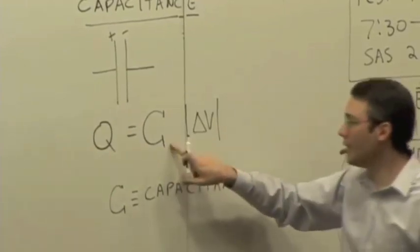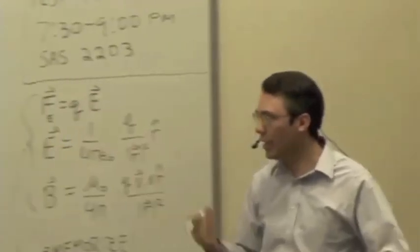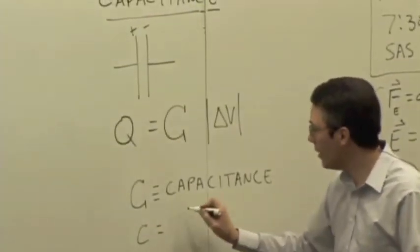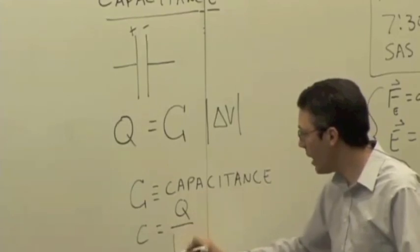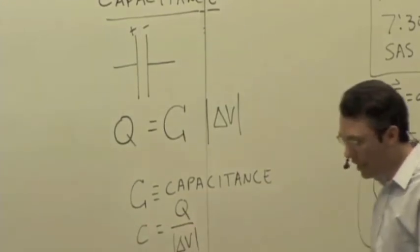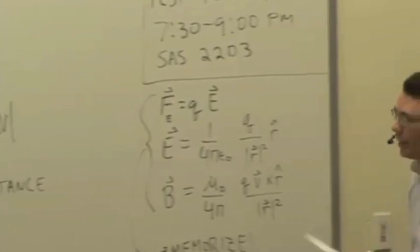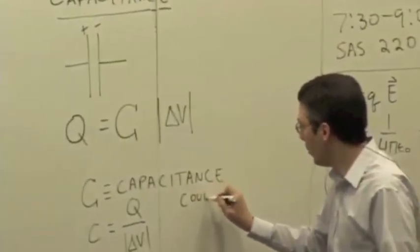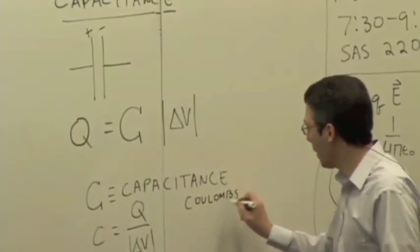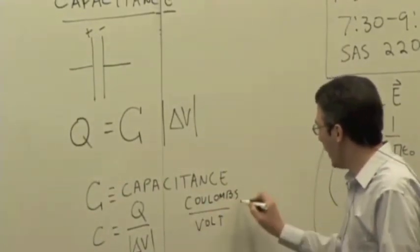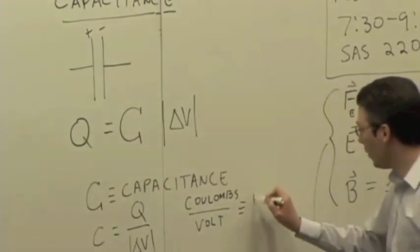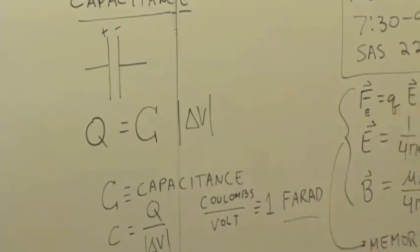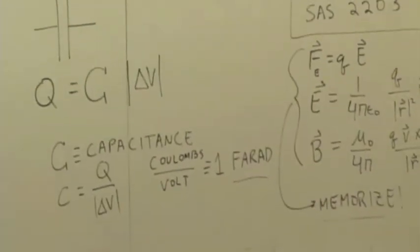Be careful — this C doesn't mean coulombs now; this is a different quantity called capacitance. By definition, it is the charge divided by the potential difference. It's measured in units of coulombs per volt, and that's defined to be 1 farad, named after Michael Faraday, the famous English physicist.